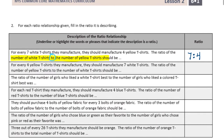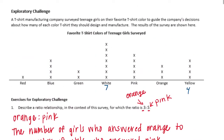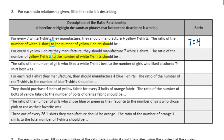The next one: for every 4 yellow t-shirts they manufacture, they should manufacture 7 white t-shirts. The ratio of the number of yellow t-shirts to the number of white t-shirts should be — the word 'to' tells us it's a ratio. Yellow shirts being first: yellow is 4, white is 7. So this is just the reverse order of what we had on the previous ratio.